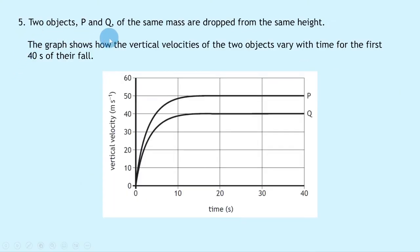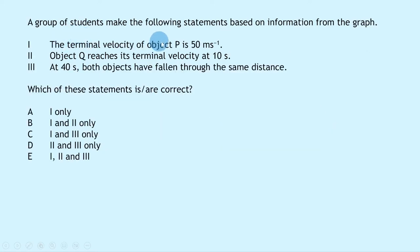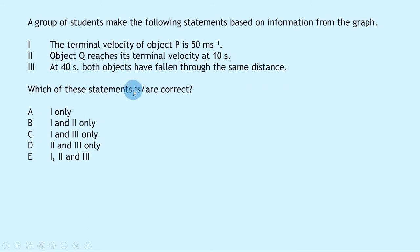Question 5 says two objects P and Q of the same mass are dropped from the same height. The graph shows how the vertical velocities of the two objects vary with time for the first 40 seconds of their fall. P is the upper curve and Q is the lower curve. A group of students make statements: (1) the terminal velocity of P is 50 m/s; (2) Q reaches its terminal velocity at 10 seconds; (3) at 40 seconds, both objects have fallen through the same distance. Which are correct?